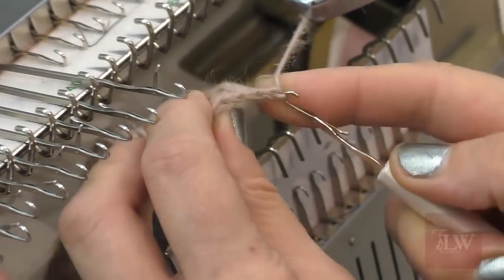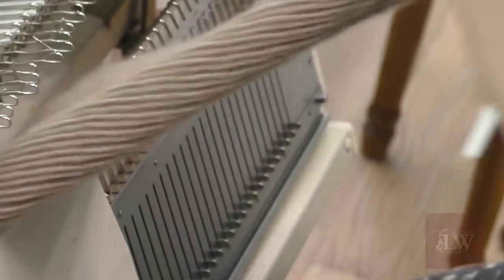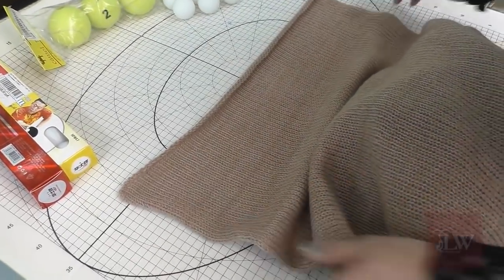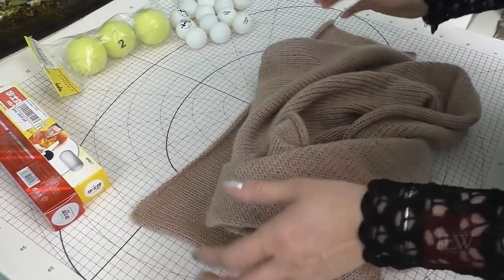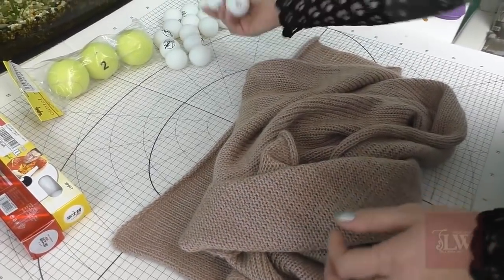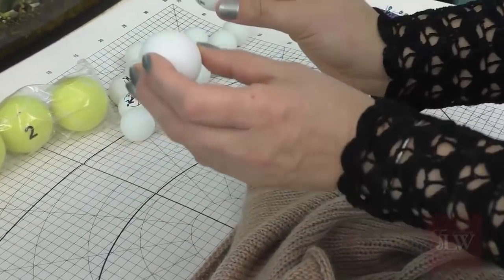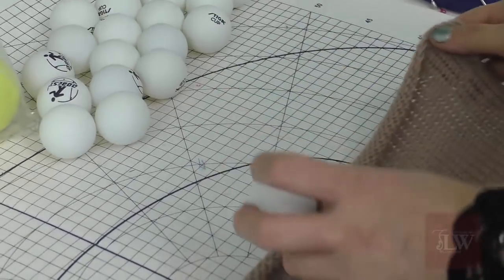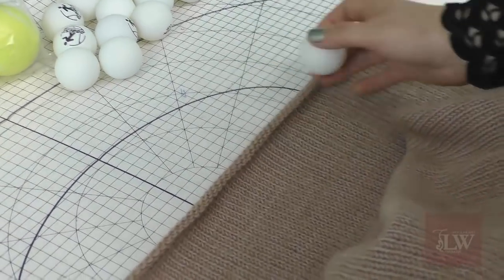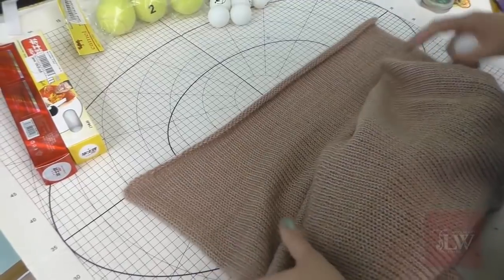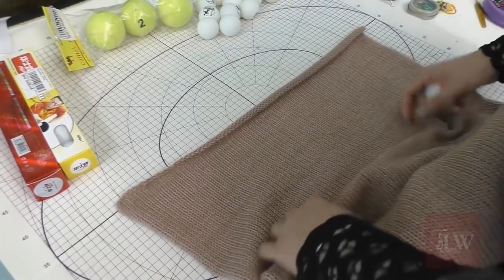So here we are, finished our cast off and weaving in the ends right away. For our next step we will need lightweight round items. I'm using these small balls. You can use walnuts or any round objects that are fairly lightweight. Here's what we're doing next: we spread the edge of our scarf out.